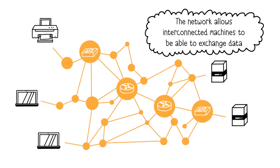As a reminder, a network enables a collection of interconnected machines to exchange data. A network consists of three types of physical components. First, end devices, which are the machines at the end of the chain, such as computers, printers, or servers.